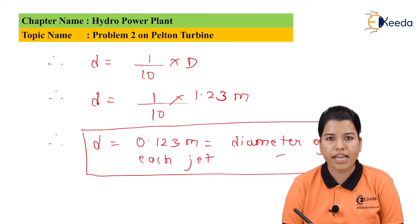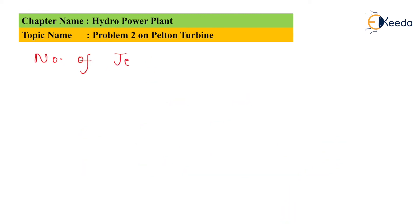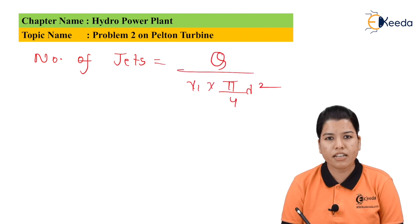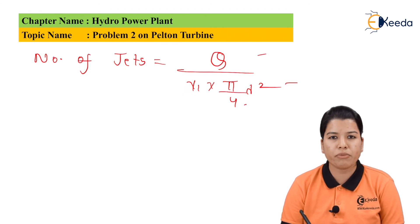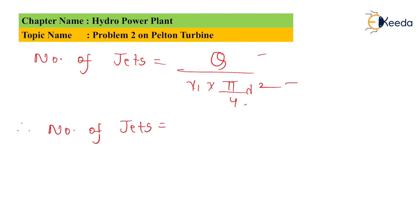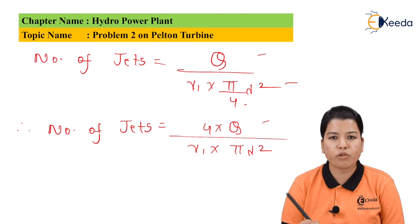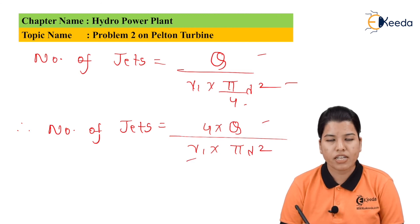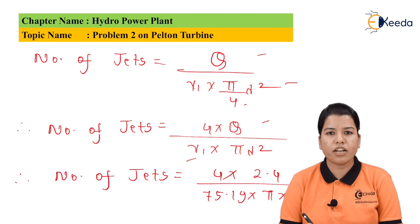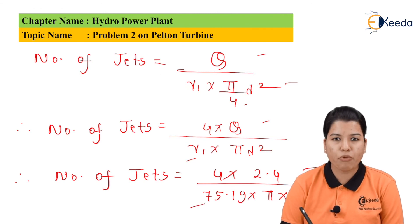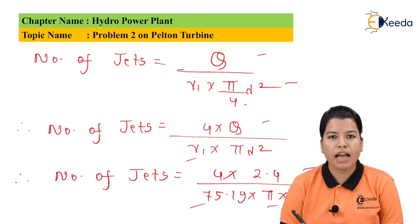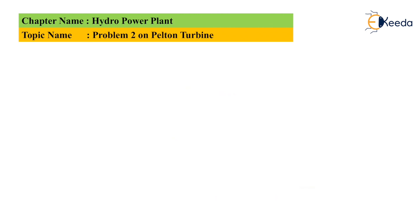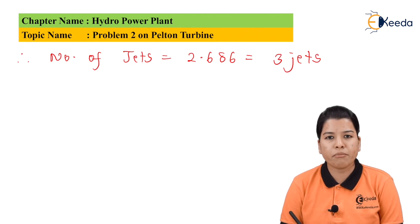Now let us find the number of jets. The formula is: number of jets equals Q divided by V1 multiplied by (pi by 4) multiplied by small d squared. Rearranging: number of jets equals 4 multiplied by Q divided by V1 times pi times d squared. Substituting values: number of jets equals 4 multiplied by 2.4 divided by 75.19 multiplied by pi multiplied by 0.123 squared. After solving, we get 2.686. Since the number cannot be a fraction, the total number of jets is taken as 3.